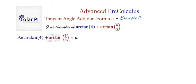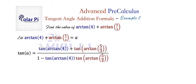All right. Now, first, let's let arctan(4) + arctan(5/3) = A. Then we see that tan(A) will be tan(α + β), and therefore tan(α) + tan(β) divided by 1 - tan(α)tan(β).